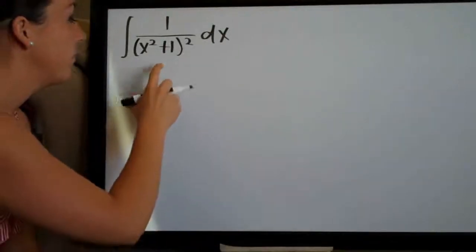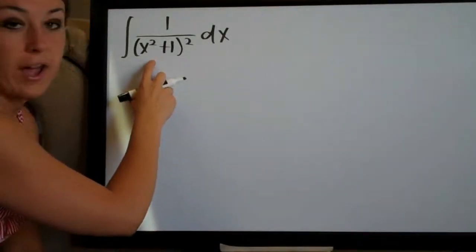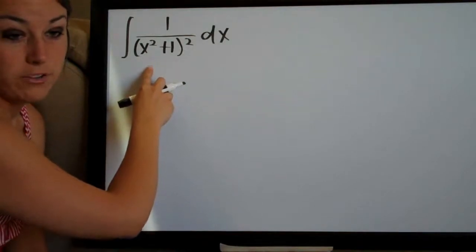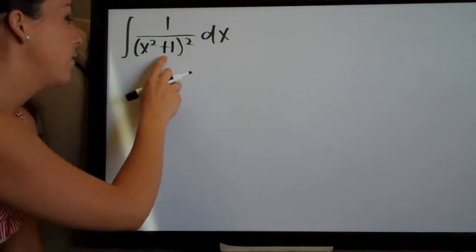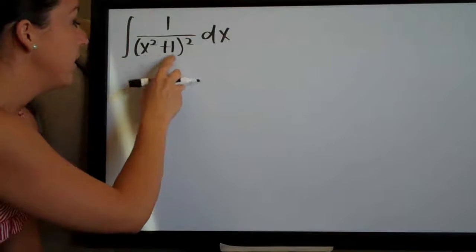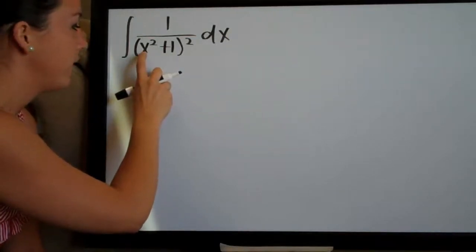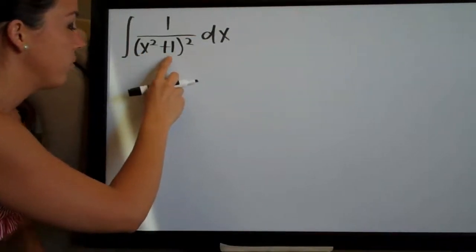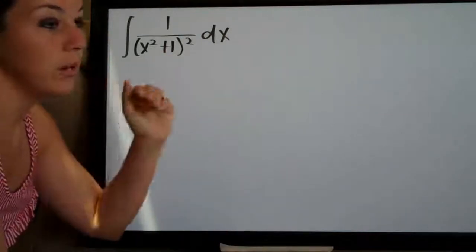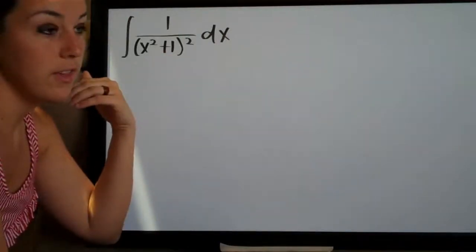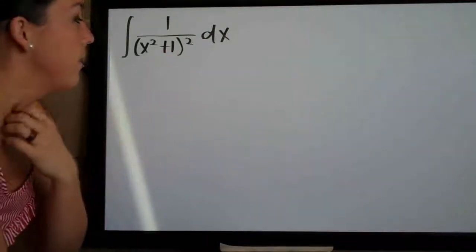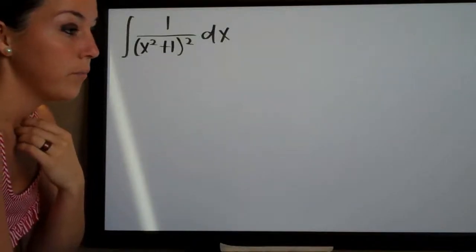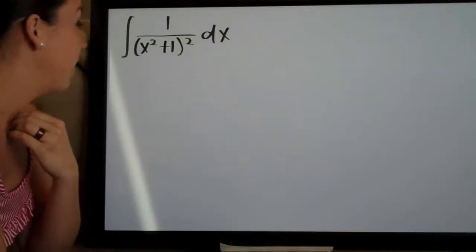The first thing we need to do is identify which of our three basic trigonometric substitutions we're going to make. In this case, because we have addition here — x squared and 1 — we have addition between the two, so we know we're going to be using the u squared plus a squared substitution, which is x equals a tangent of theta.